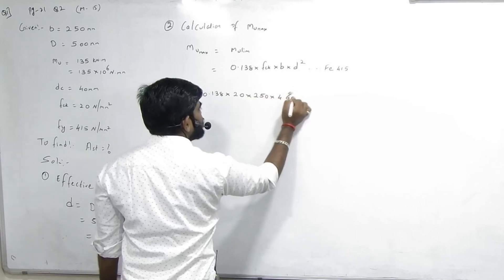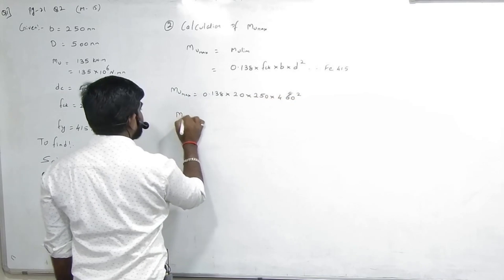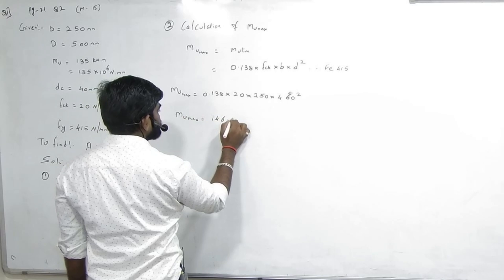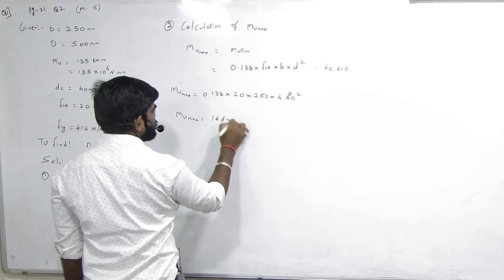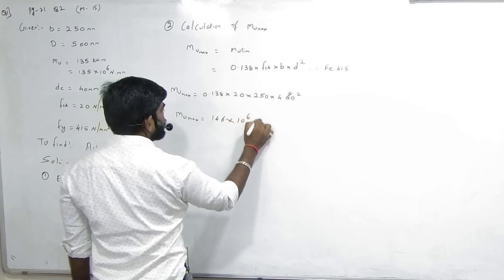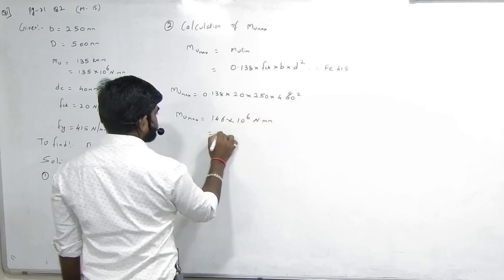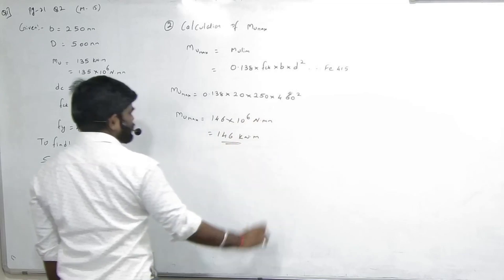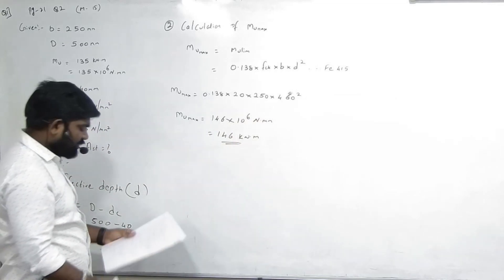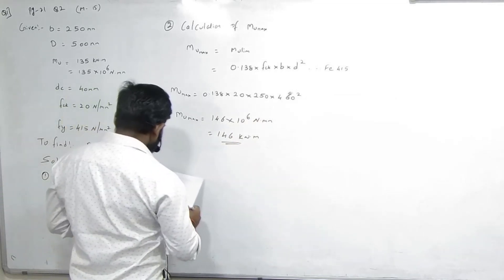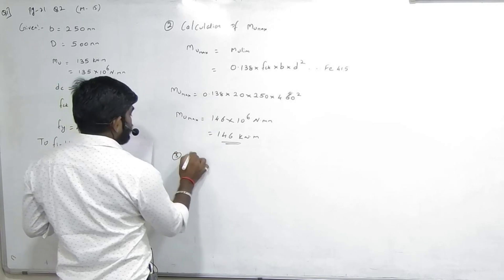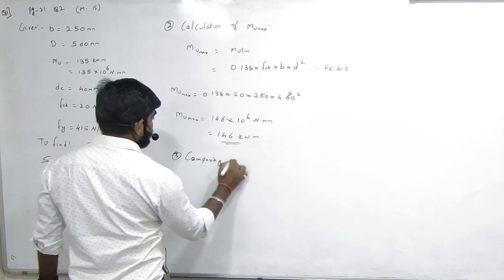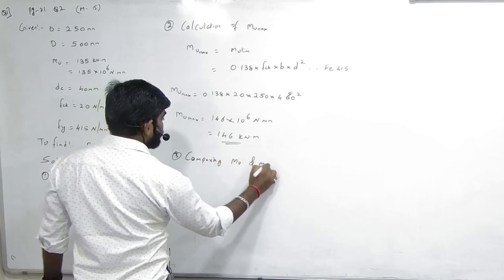MU.max = 146 into 10 raise to 6 Newton dot mm. Aapko convert nahi karna toh mat karo. Next step: comparing MU and MU.max.